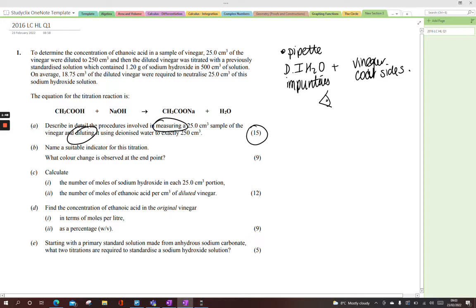Now diluting it. So when we're diluting it, release your 25 cm³ of your vinegar into a clean volumetric flask. Add the ionized water until within 1 cm of the calibration mark. Then use a dropper or add the ionized water until the bottom of the meniscus rests on the calibration mark. Stopper and invert 20 times to ensure an evenly mixed or homogeneous solution. So great waffle. Lovely marks.